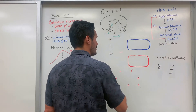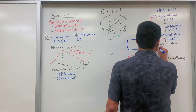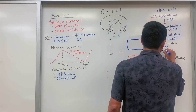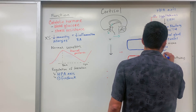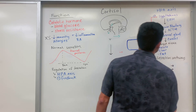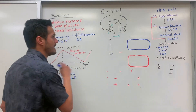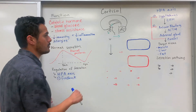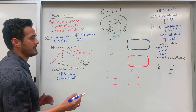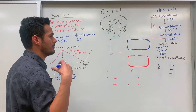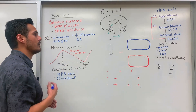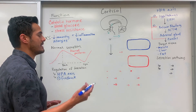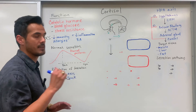Some of the different target tissues include the muscle, the liver, as well as fat tissue. Now let's get into the actual pathway itself — how is cortisol actually synthesized and what effect does it have within these specific types of tissues?